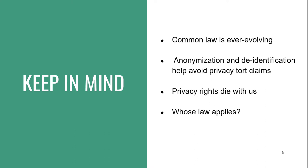Three other things to note. First, the more data we obtain, use, and publish are anonymized or de-identified, the less risk arises under any state privacy tort. Second, privacy rights in U.S. law are personal, meaning they terminate when we die. This means that using data concerning people who have died cannot give rise to invasion of privacy torts.